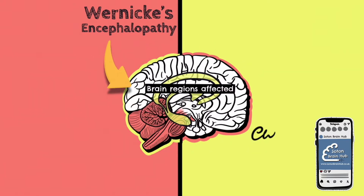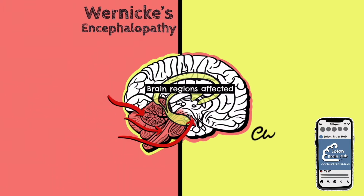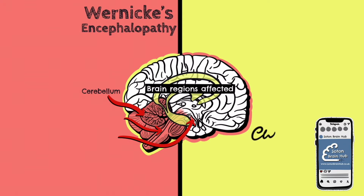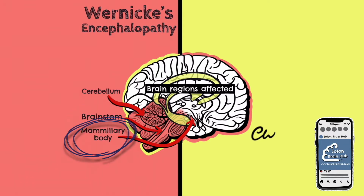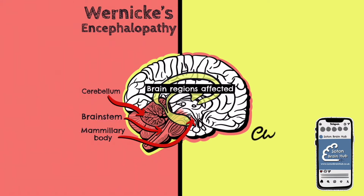Let's start with Wernicke's syndrome, also known as Wernicke's encephalopathy. The regions of the brain primarily affected are the cerebellum, brainstem, and the mammillary body. Remember, if you know the regions of the brain that are affected, you should be able to make a pretty good guess at the type of symptoms a patient may present with.